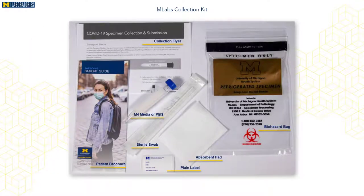Prior to performing the procedure, check all of your supplies. It is recommended to only have materials for one patient at your collection station at a time. You may be submitting a patient specimen from a kit provided by Michigan Medicine Laboratories. The MLabs kit contains all of the materials that you need, including a patient brochure. Giving the patient their brochure while you are getting set up gives the patient information about the procedure and their next steps.